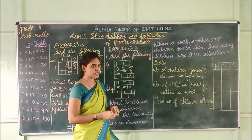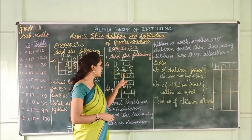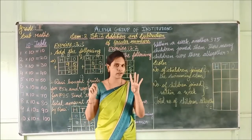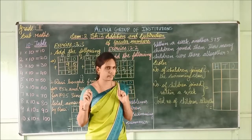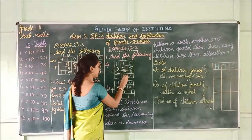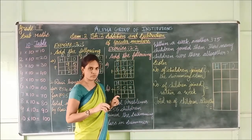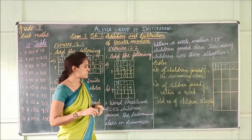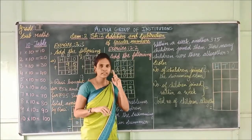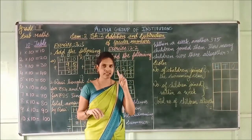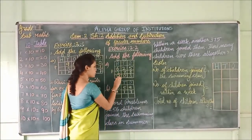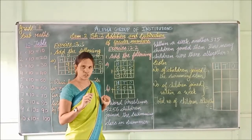Now move to tens place: 2 plus 7 is 9, plus carry over 1 is 10. Write 0 here and carry 1 to the next place value. Now move to hundreds place — here we have numbers, so we have to add. 6 plus 2: keep 6 in the mind, take 2 fingers: 7, 8. Then 8 plus 1 carry over is 9. Children, don't forget to add the carry over number.